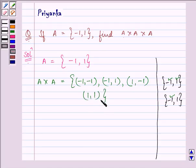Right. So A × A has four elements to it. Now, we need to find A × A × A. That will be the set A × A with, again, A.